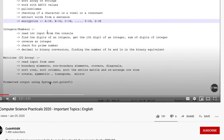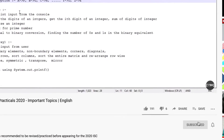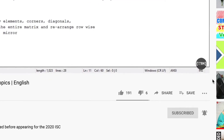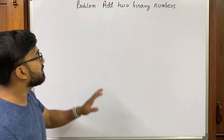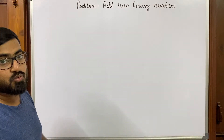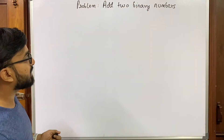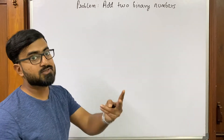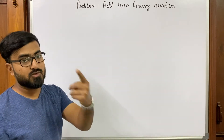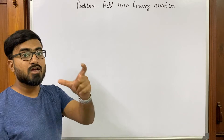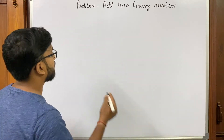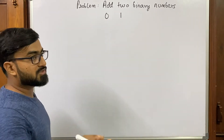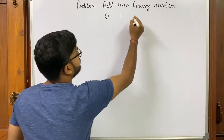Please do not forget to subscribe to this channel and click on the bell icon to receive all the latest updates. So if you have to add two binary numbers, what are binary numbers? Binary numbers are base two, meaning they have two digits they can use to represent a value — zero and one.